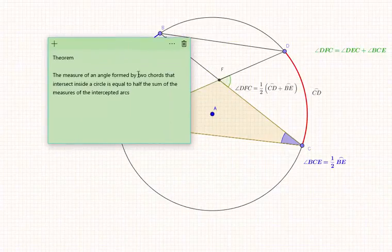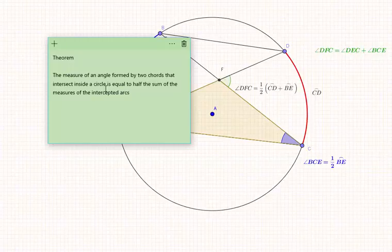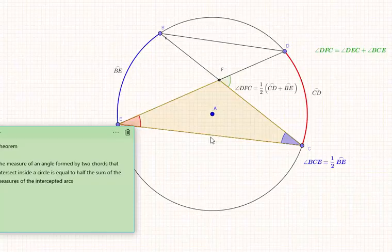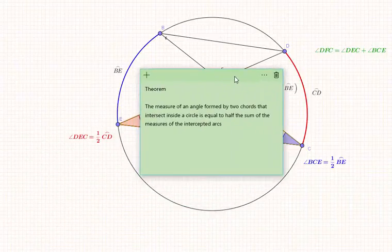The measure of the angle formed by two chords that intersect inside of a circle is equal to half of the sum of the measures of the intercepted arcs: half of CD plus BE.